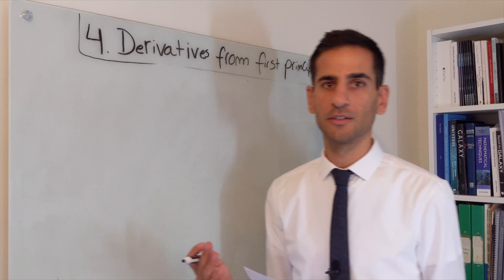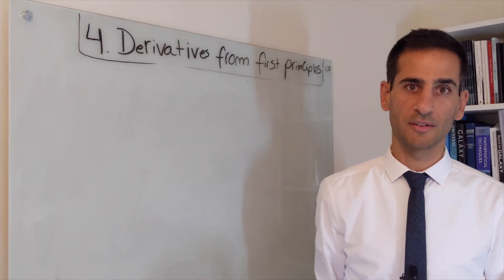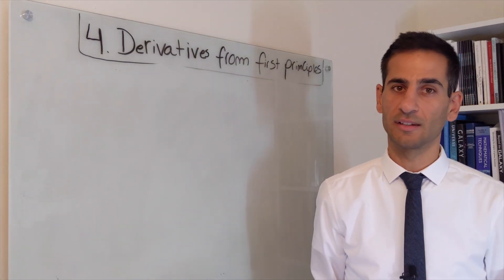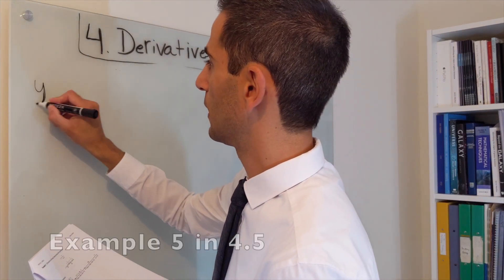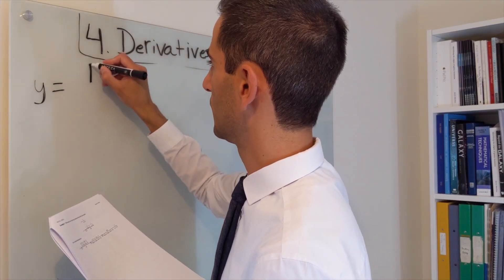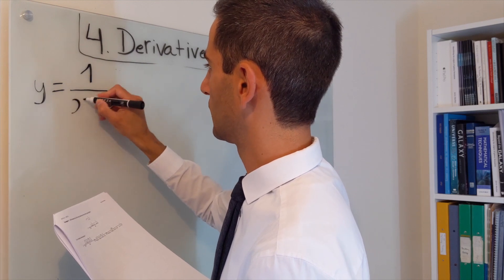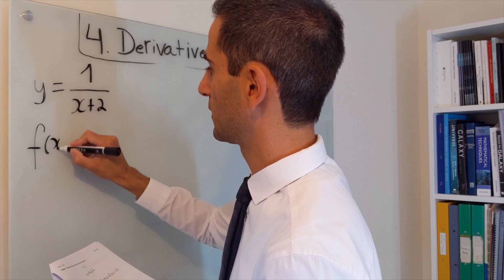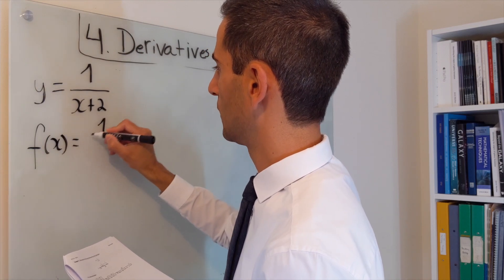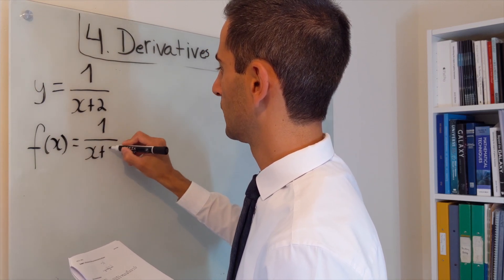Let's say that we want to differentiate, and you can find this also in the lecture notes. This is example number 5. The function y equals 1 over x plus 2. So this means f of x equals 1 over x plus 2.